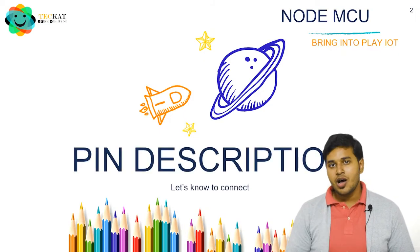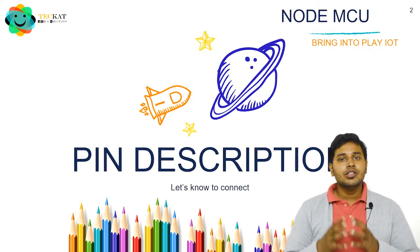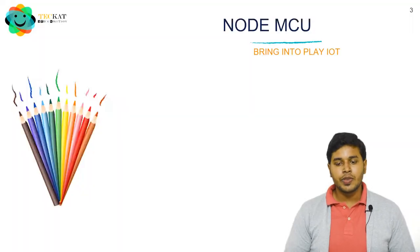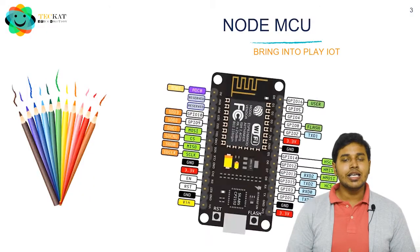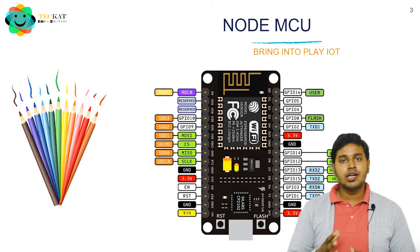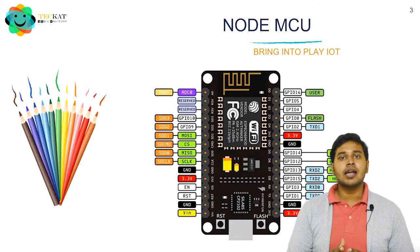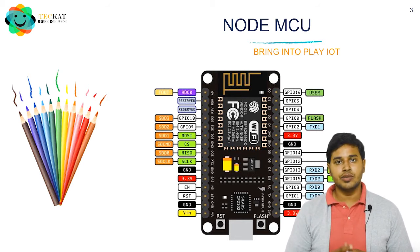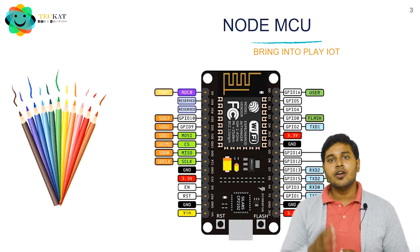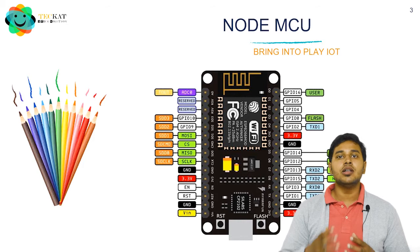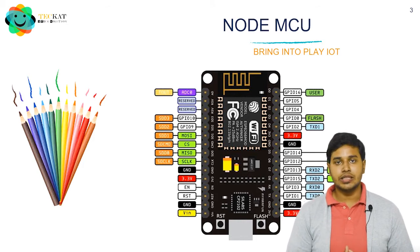So let's know how to connect. This is the diagram or the pin description of NodeMCU. You will see on the top right corner there are different numbers like D0, D1, D2 till D8. These pins are the digital pins of NodeMCU. Through these pins we connect digital sensors or control digital modules.